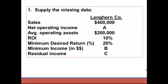For Longhorn, we know that sales are $400,000. Net operating income is unknown — letter A. Average operating assets are $200,000. ROI was 10%. Minimum desired return is 20%. Minimum income in dollars is B, and residual income is C.